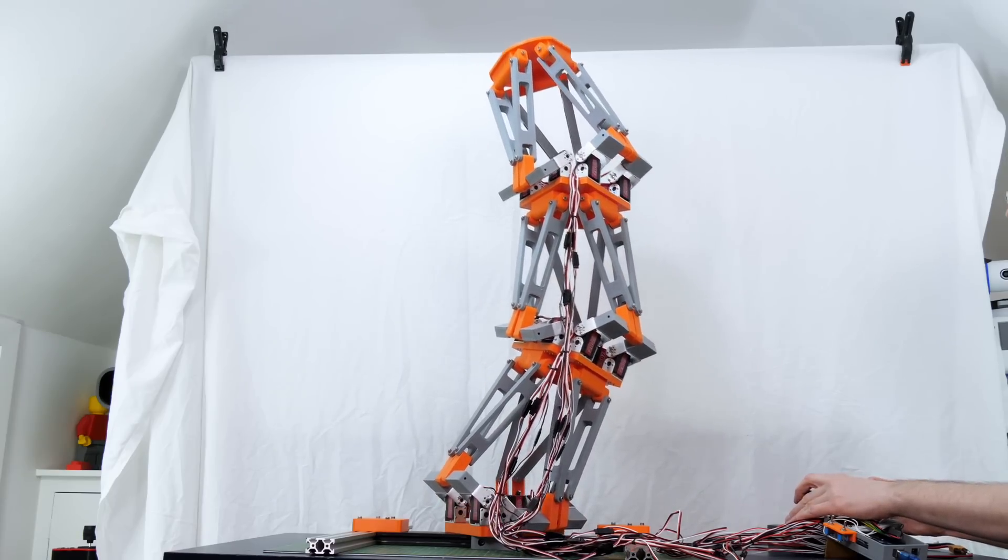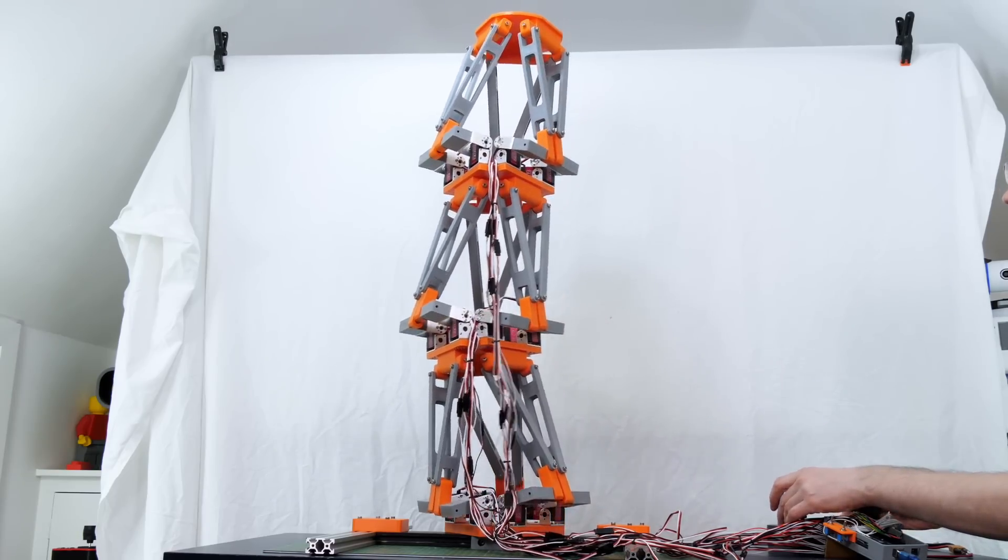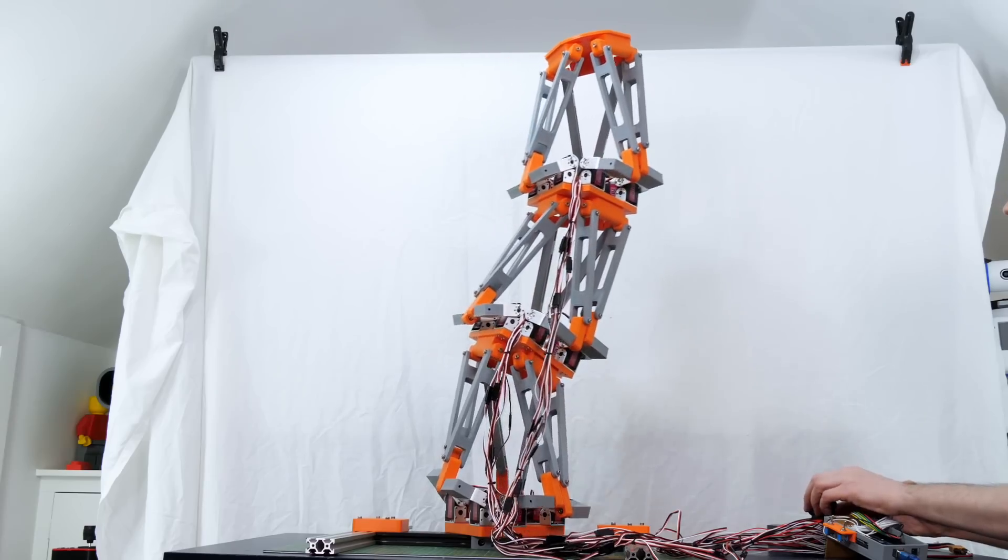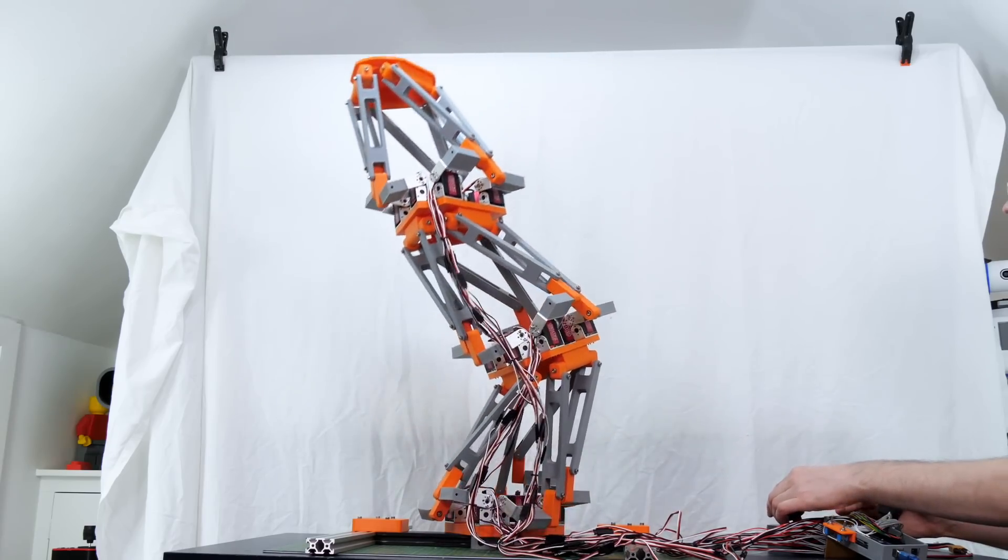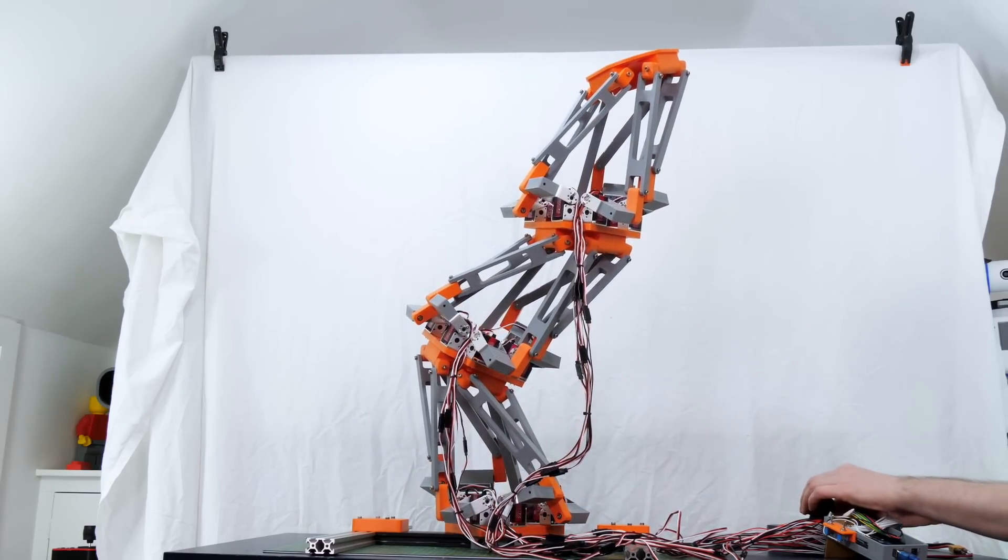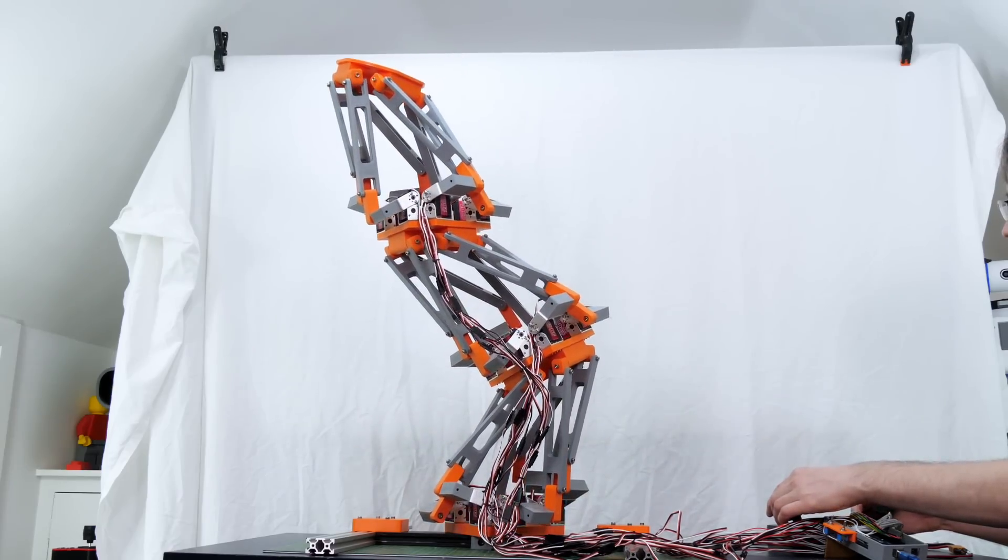If I move only the bottom one in the opposite way to the other two, then that gives us something that's actually quite useful. So we can bend on the spot there with the bottom section bending one way and the other two bending back above it in the other direction. So this is actually quite a good tentacle feeling which would be quite useful to Dr. Octopus.